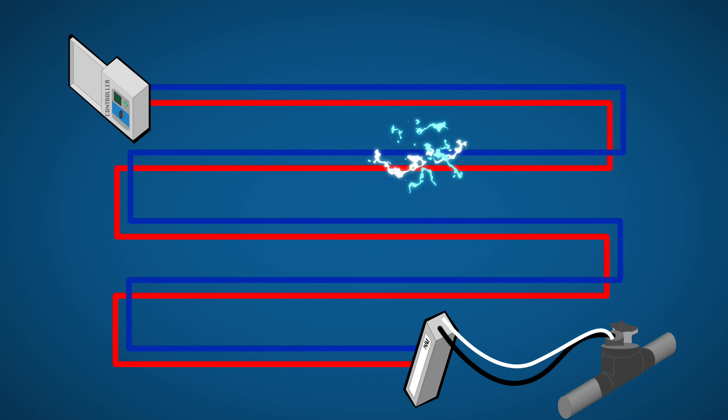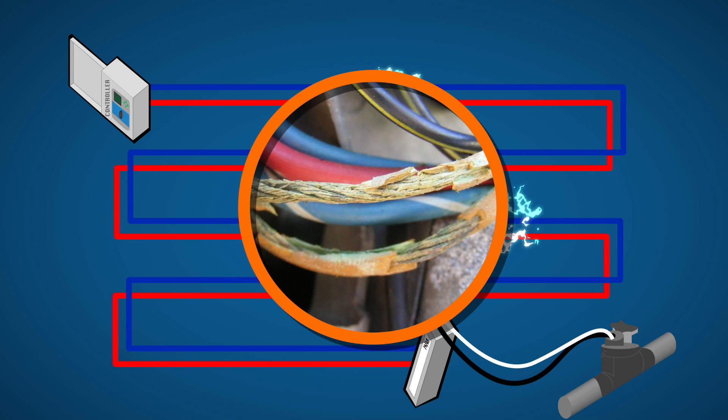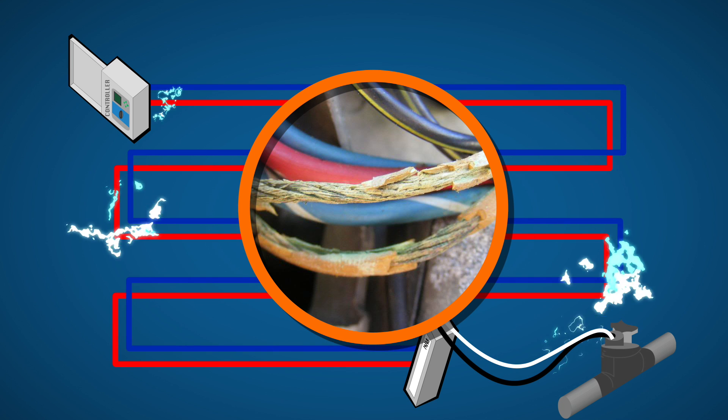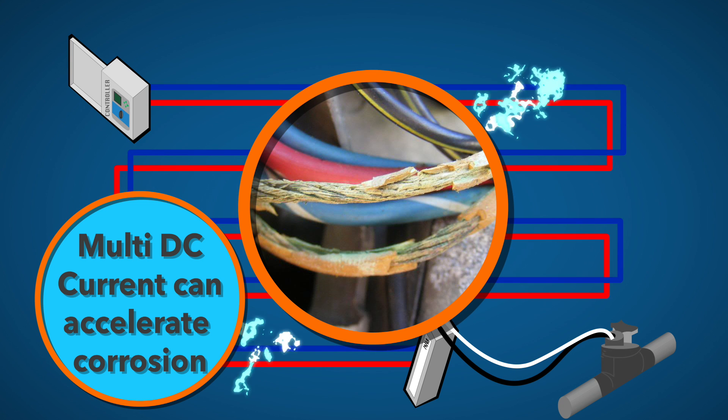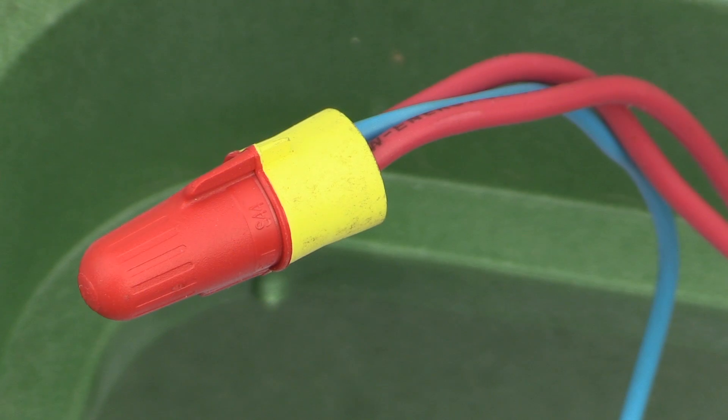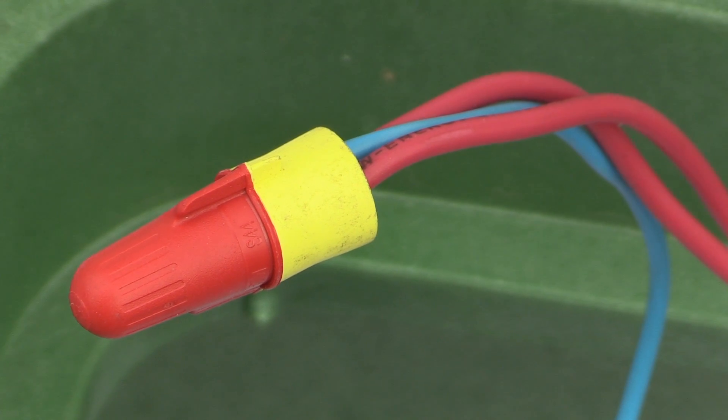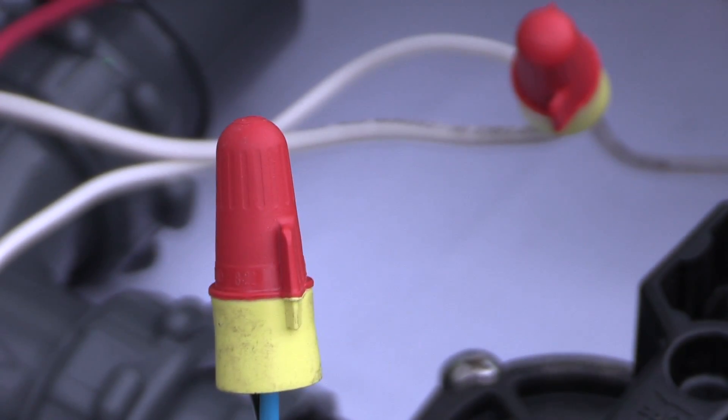Because the wire loop is continually energized in most decoder systems, corrosion can be a powerful enemy to these wire splices. Many two-wire systems use a multi or modified DC current, which can accelerate corrosion of poor splices and causes wires to separate. In many cases, you will find corrosive dust or separated wires in valve boxes where splices were made improperly.